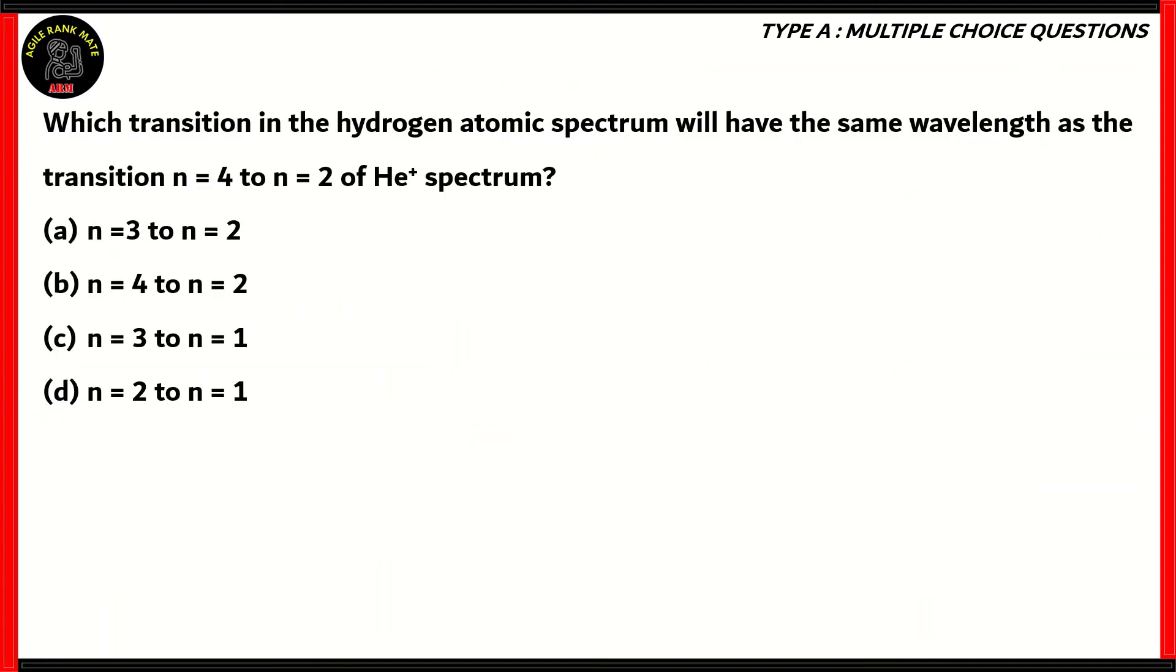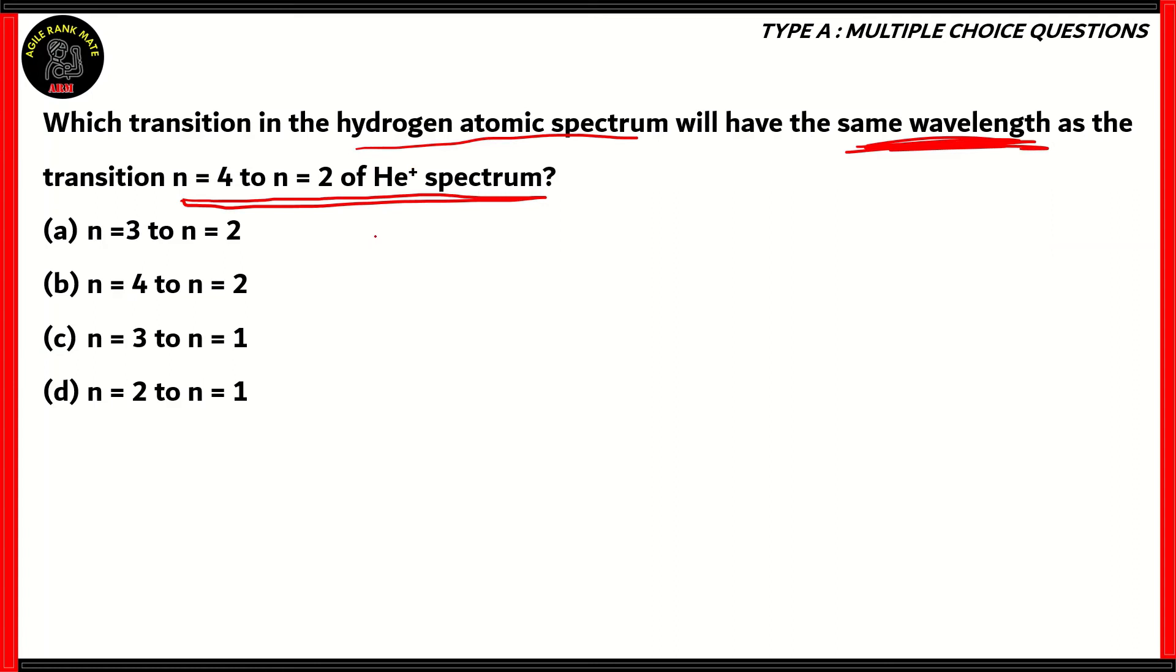Let's look at the final question of this episode. Which transition in the hydrogen atomic spectrum will have the same wavelength as the transition n equals 4 to n equals 2 of the helium plus spectrum? Here we need to find out which of these would have the same wavelength. How do we find wavelength when it comes to hydrogen or helium spectra? We use the formula for wave number. The general formula would be 1 by lambda equals z squared times r, which is the constant. And then inside the brackets you'll have 1 by n1 squared minus 1 by n2 squared.